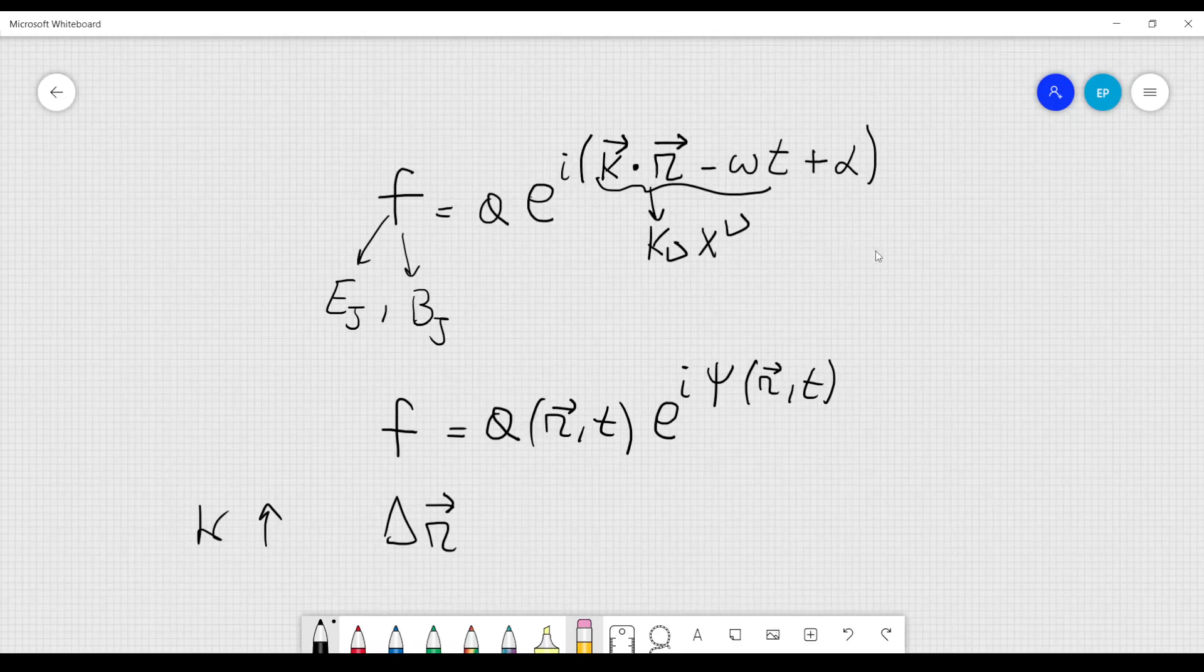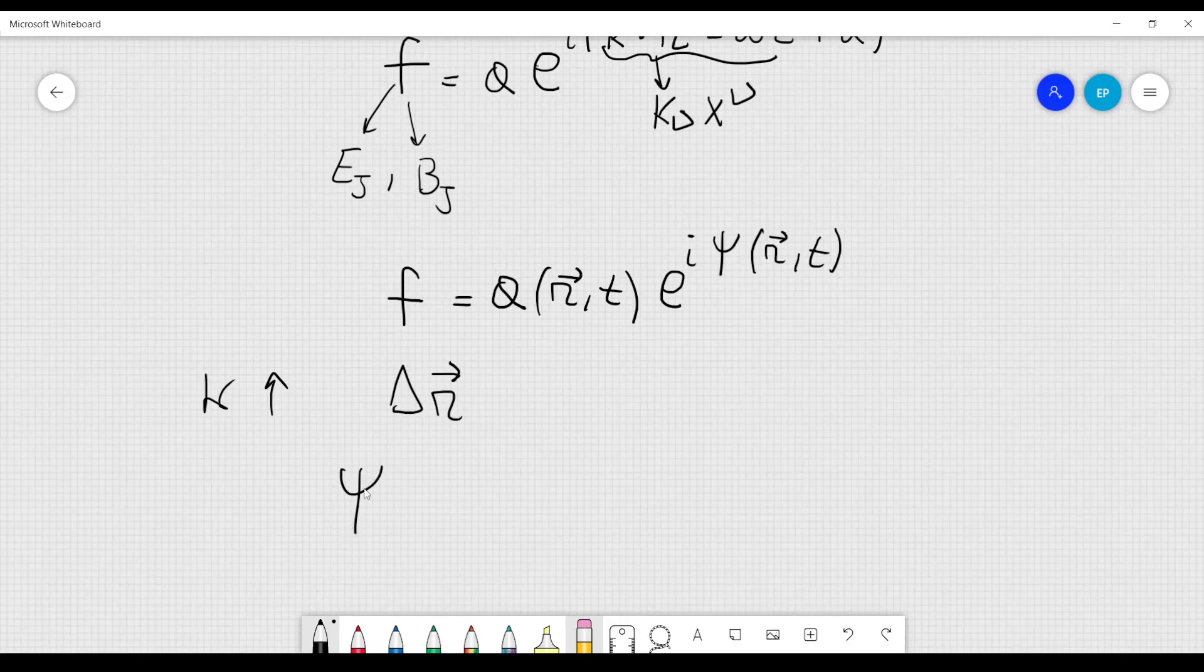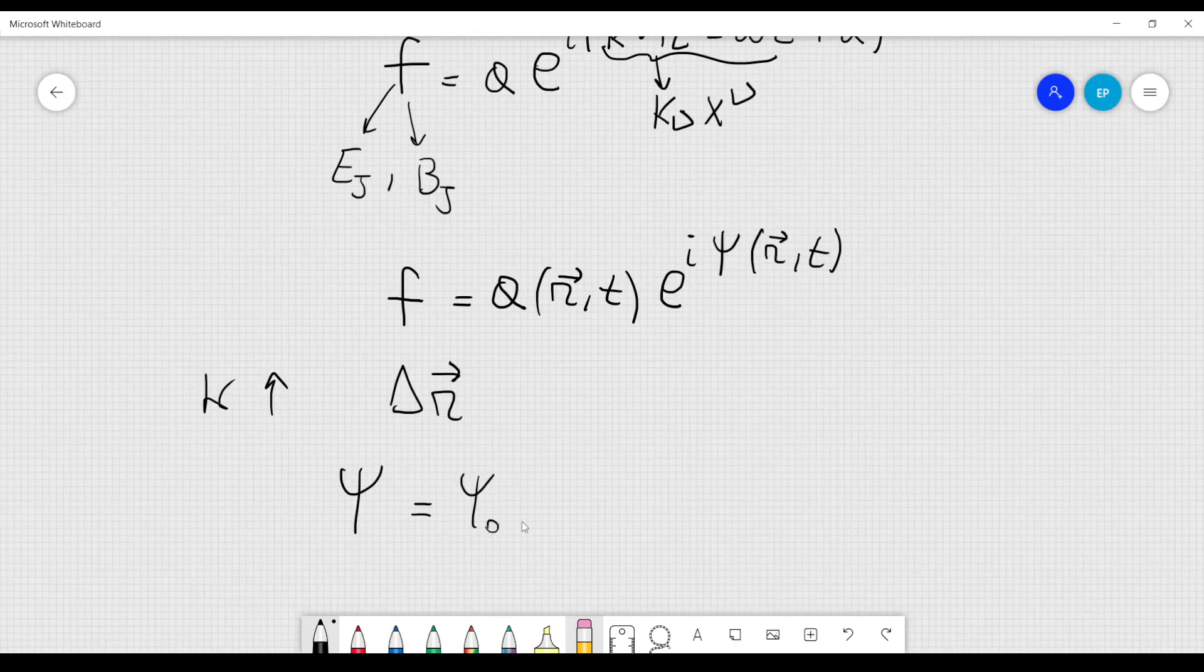Over small regions and time intervals, we can expand psi using a series. So we can write psi equal to psi naught, by psi naught I mean psi of 0, 0, where this 0 here is a vector of three components related to r,